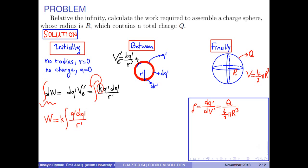From the first equality, dq' can be expressed as rho times dv'. dv' can be written as 4 pi times r' squared dr'.